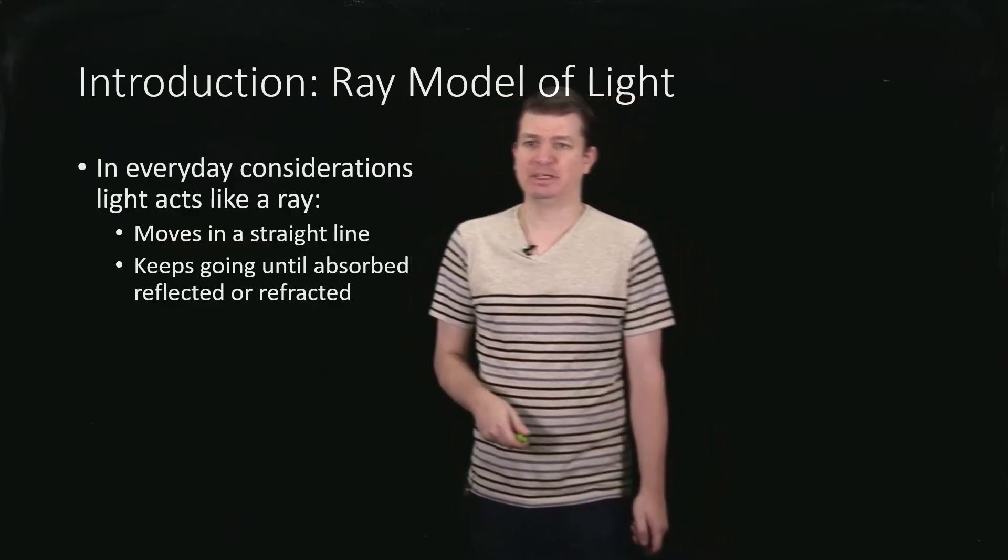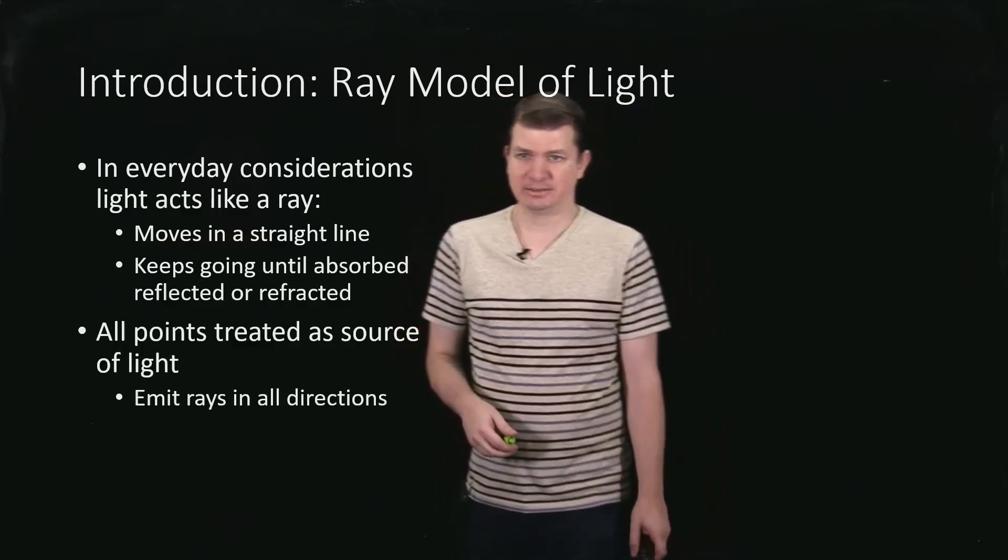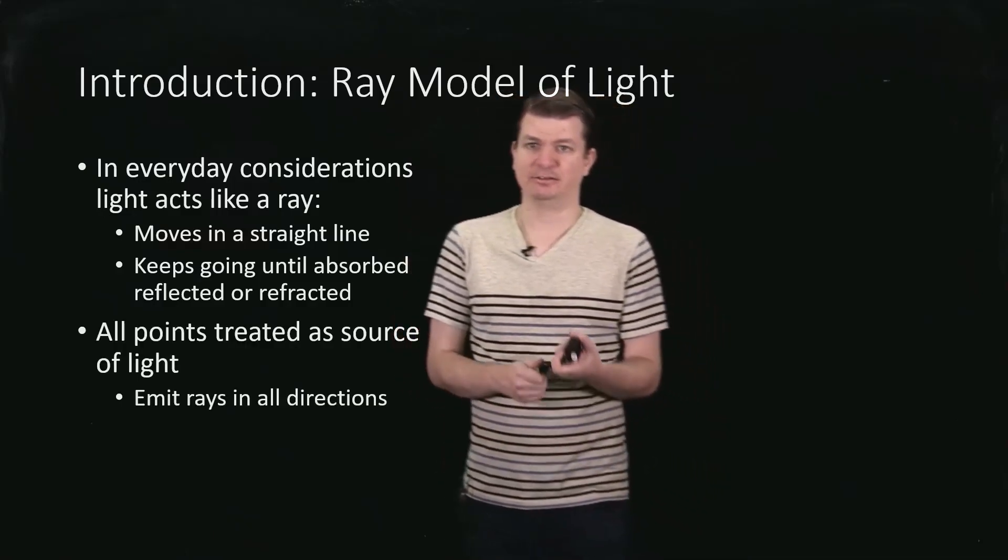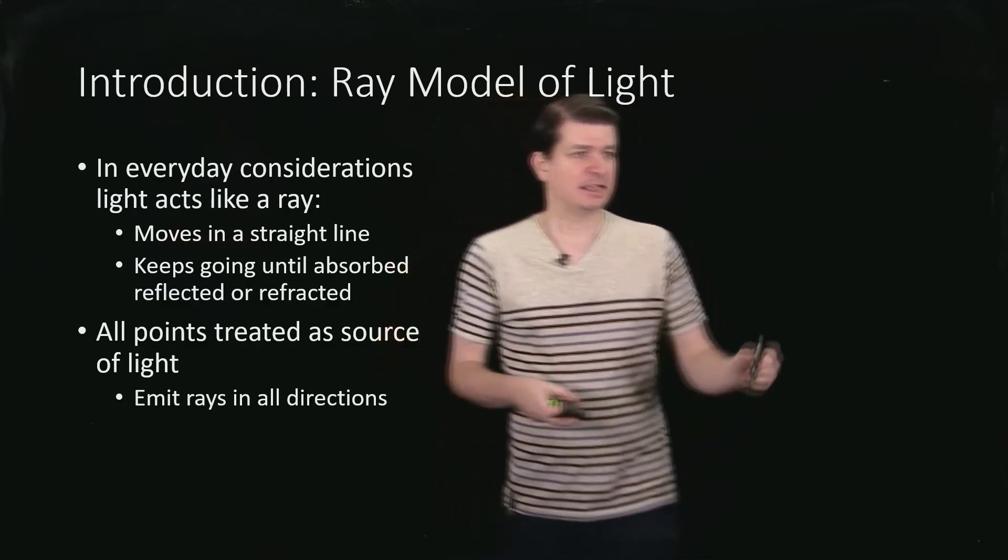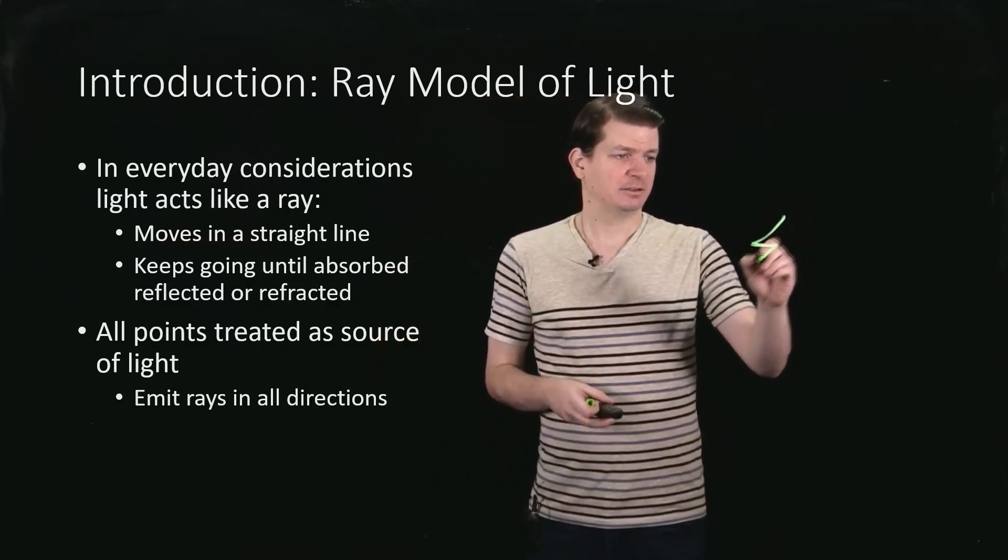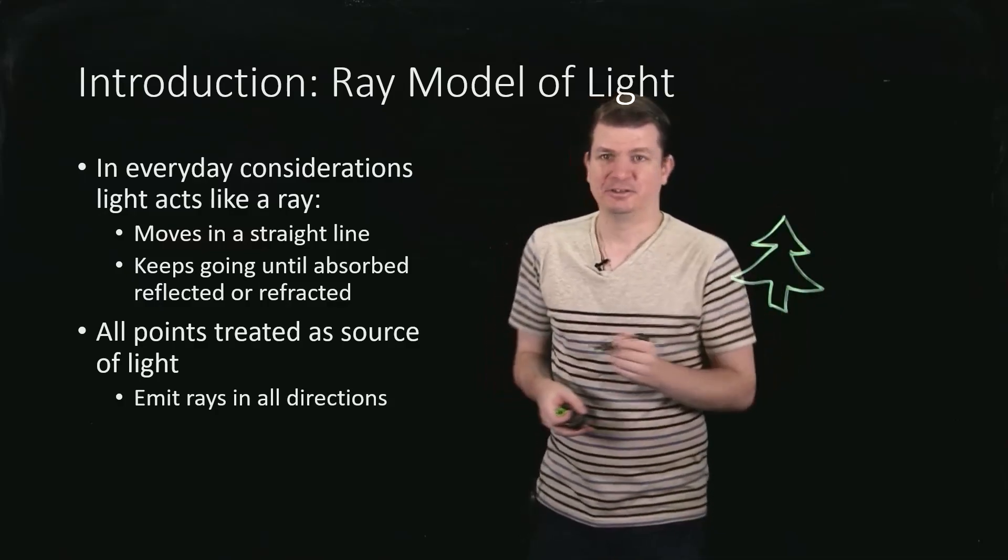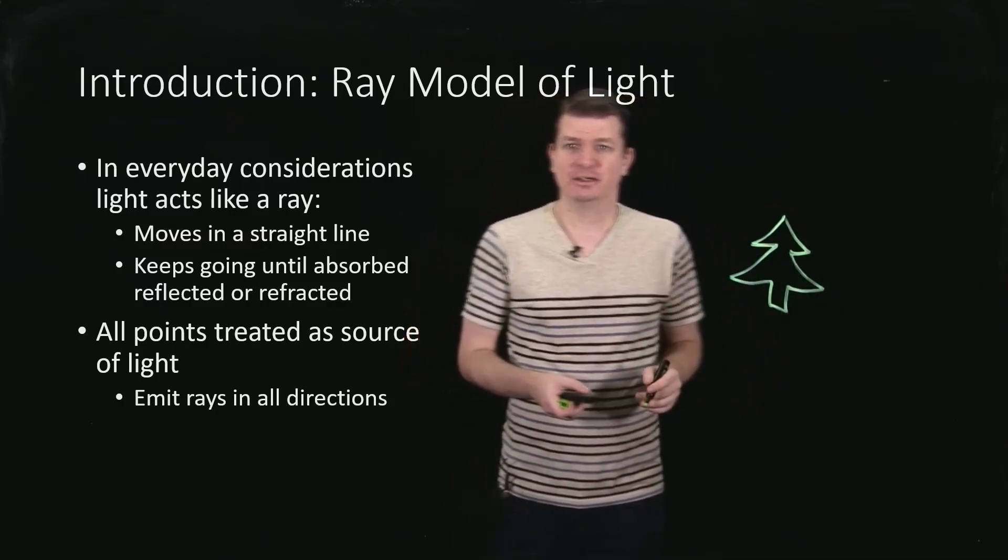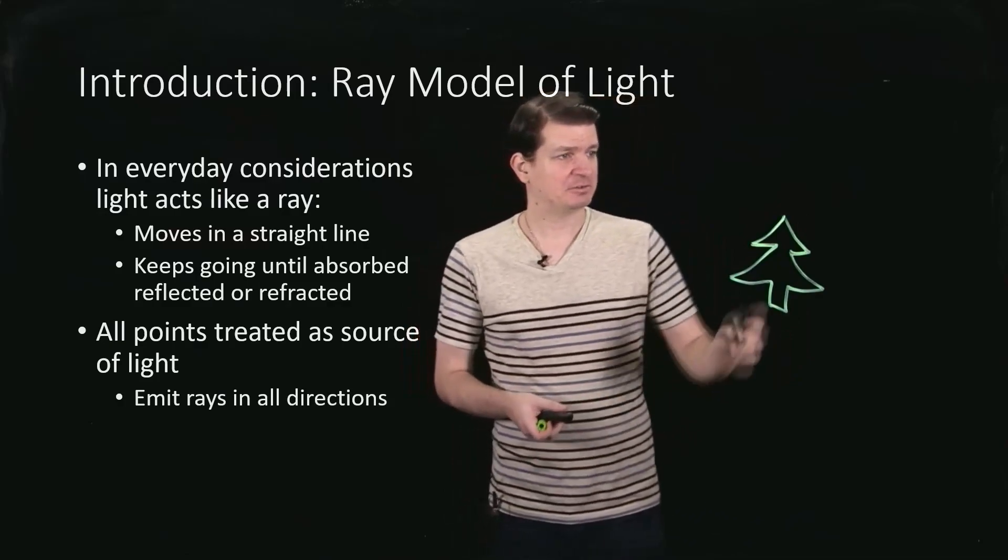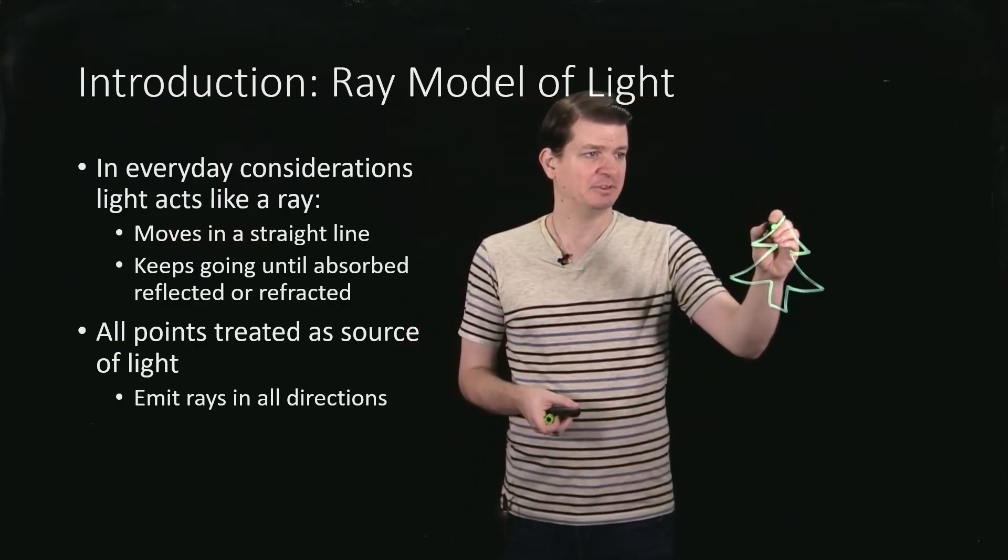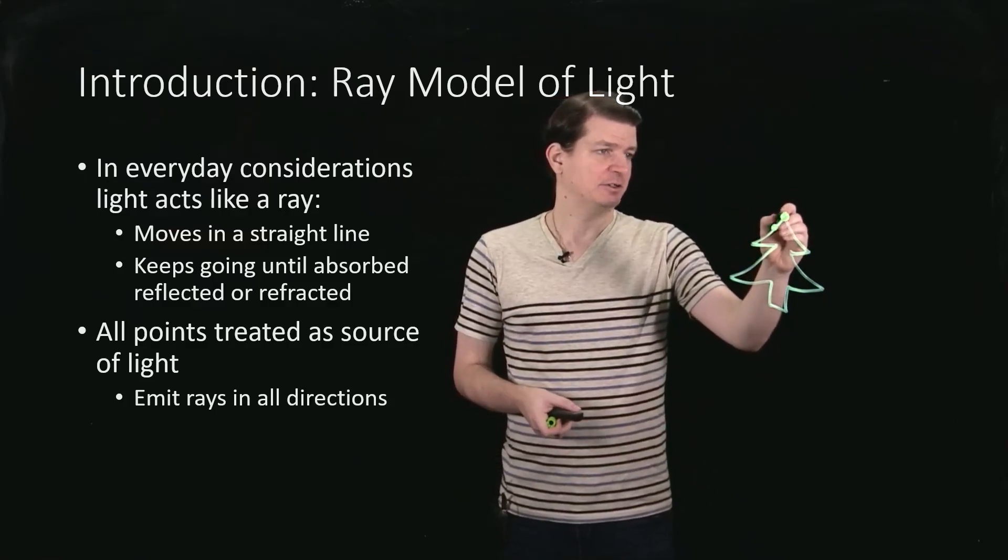So what that means is that you imagine anything, any object that you're looking at and seeing, say a tree over here. You're looking at this tree. What you imagine for this ray model is that every single point on the tree, maybe that one and the top, let's do the top because that's easier.